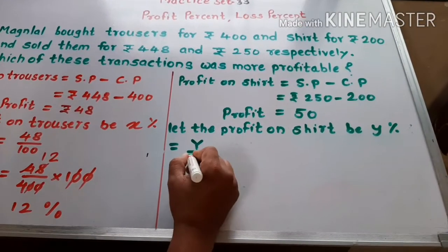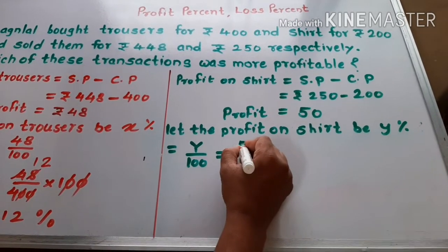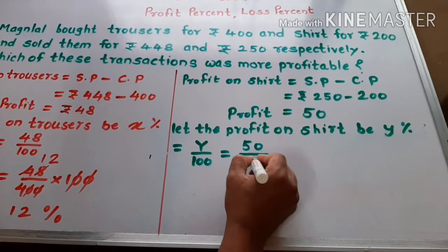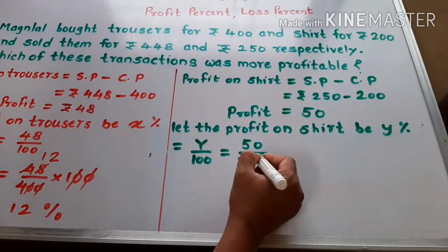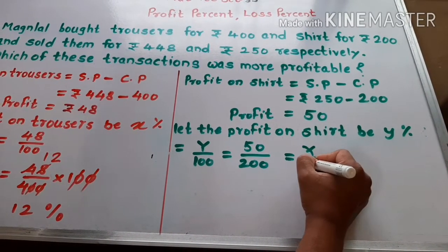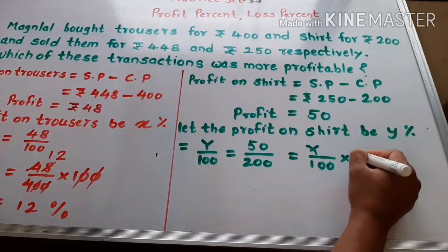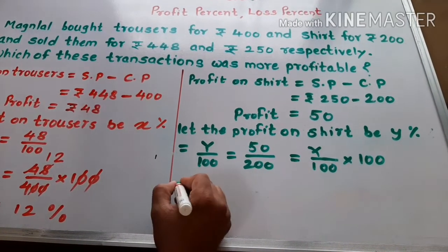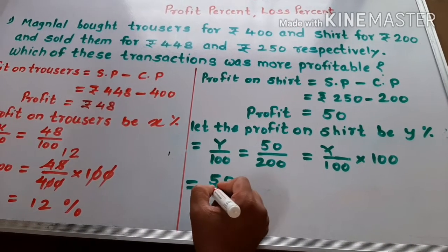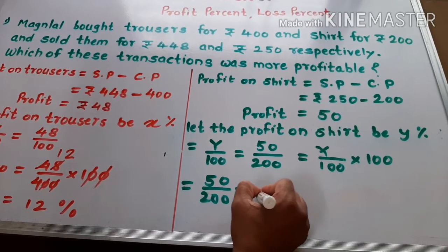Y upon 100 is equal to 50 upon 200. Y upon 100 multiple by 100, we write as 50 upon 200 multiple by 100.